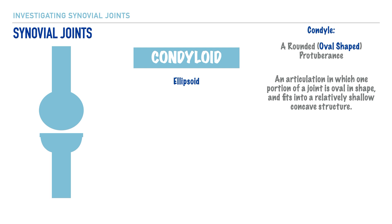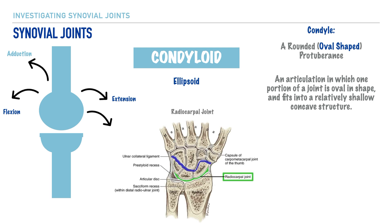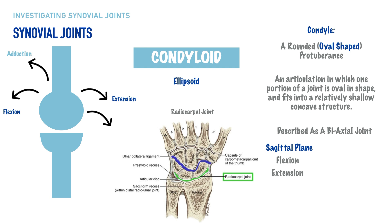At a condyloid joint the movements that can be produced include flexion, extension, abduction, and adduction, and because each of these movements are present, circumduction can take place too. Perhaps the best example is the radiocarpal joint — the articulation between the radius, scaphoid, lunate, and triquetrum — where the radius represents the shallow concave structure and the scaphoid, lunate, and triquetrum represent the oval-shaped structures. A condyloid or ellipsoid joint is a biaxial joint, with flexion and extension in the sagittal plane and abduction and adduction in the frontal plane.